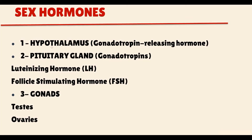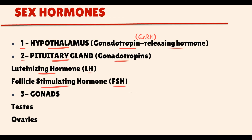In the physiology of sex hormones, we basically have three levels of regulation. The first level is the hypothalamus, which secretes gonadotropin-releasing hormone. The second level is the pituitary gland, which secretes gonadotropins — luteinizing hormone and follicle-stimulating hormone. They're called gonadotropins because they stimulate the gonads: in males they act on the testes, and in females they act on the ovaries. The third level is the gonads, which secrete sex hormones.